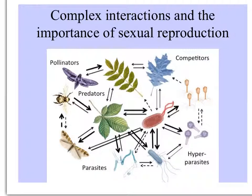This picture shows how many different interactions are affected by the benefits of sexual reproduction — not only the macroscopic things we can see, like these plants being eaten by herbivores and benefiting from pollinators competing with each other, but also the microscopic things: diseases and viruses that also attack them.